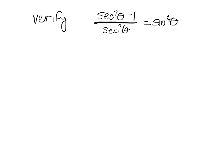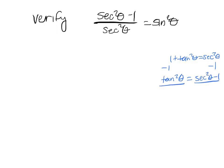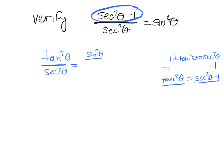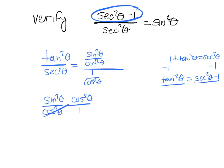Another verify problem. Right away I see a Pythagorean identity: 1 plus tangent squared equals secant squared. Rearranging, secant squared minus 1 equals tangent squared. So I replace secant squared minus 1 with tangent squared. Then turning everything into sine and cosine: tangent squared is sine squared over cosine squared, and secant is 1 over cosine squared. Multiplying by the reciprocal, the cosine squareds cancel and I just get sine squared.